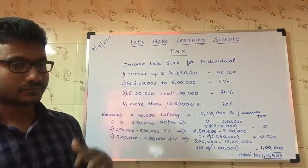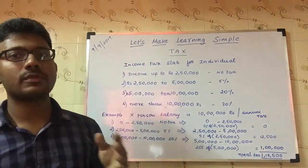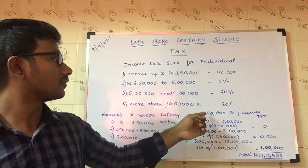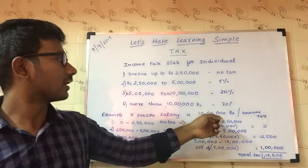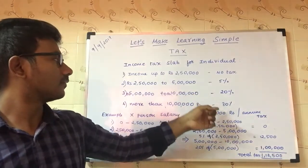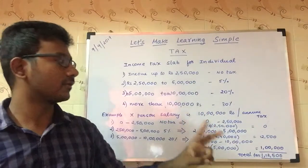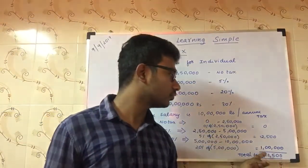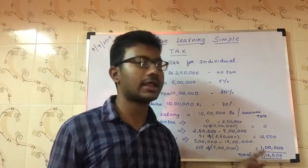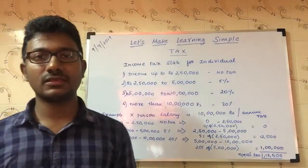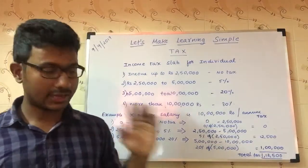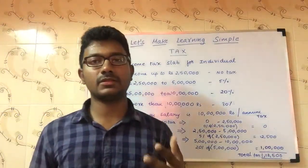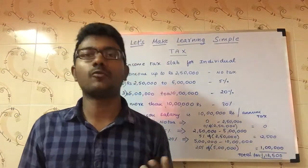If you had interpreted it wrongly, you would have calculated 20% of 10 lakhs as 2 lakhs. But the correct tax that you need to pay is 1,12,500 rupees. This is the correct interpretation of how we pay tax to the government.